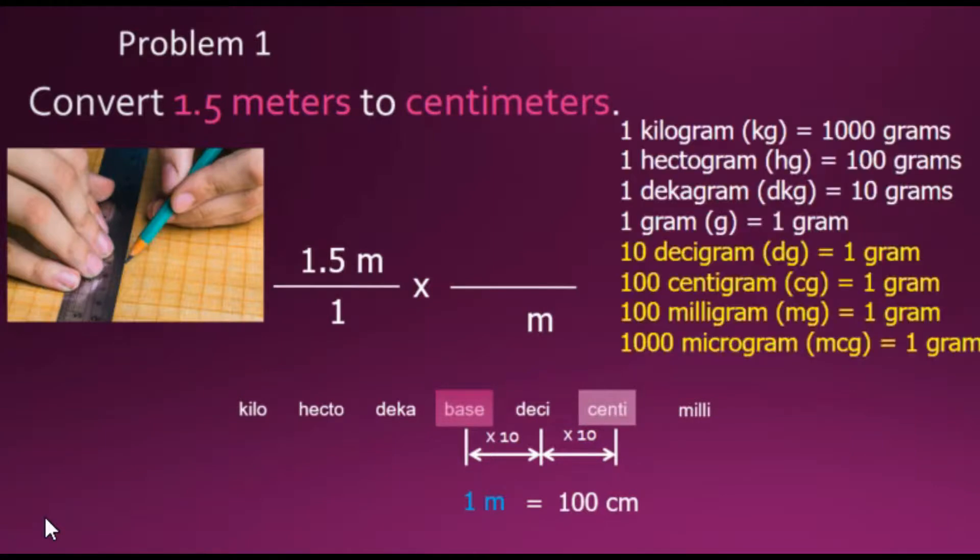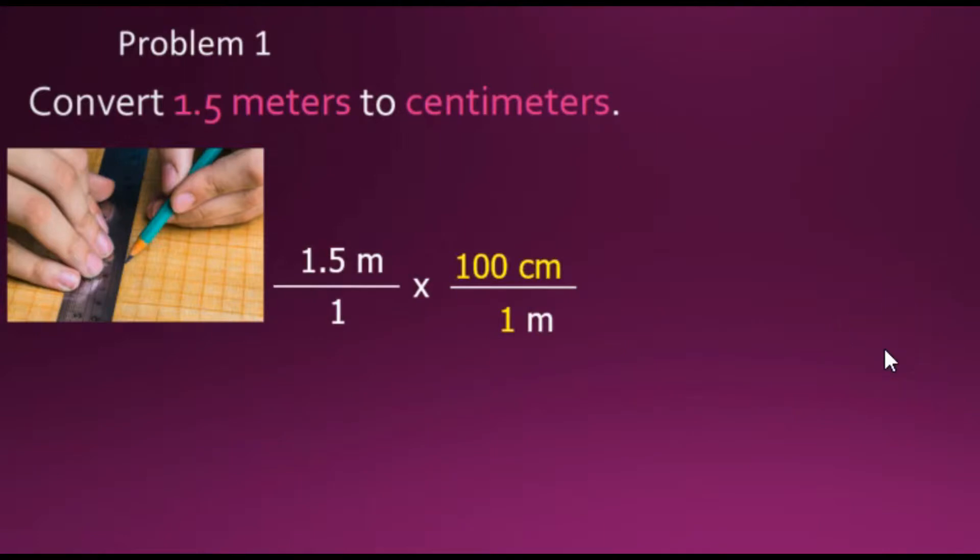Another option is to use a chart shown here for the base gram, but represents the prefixes for meters as well as liters. And here we have 100 centigrams equals 1 gram, which is also the same for 100 centimeters is equal to 1 meter. Expressed as a conversion factor fraction, this fraction has a value of 1.